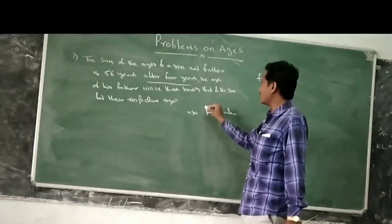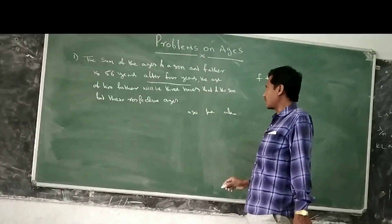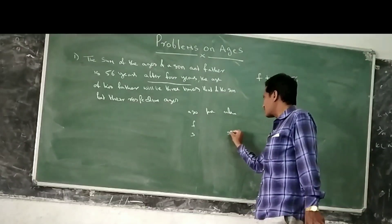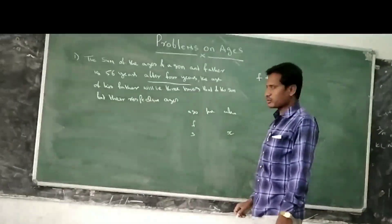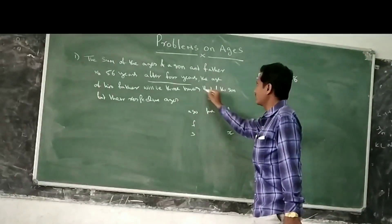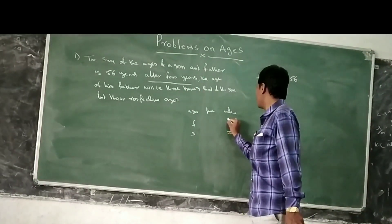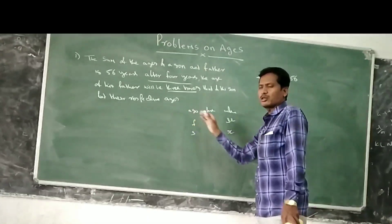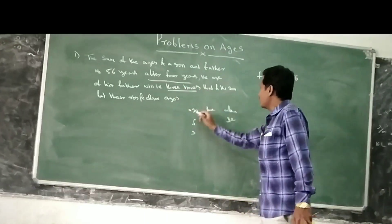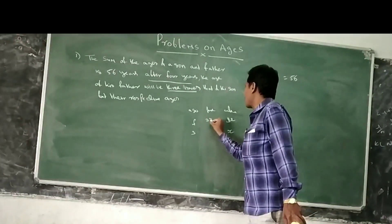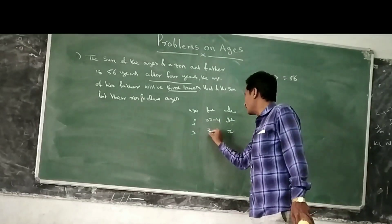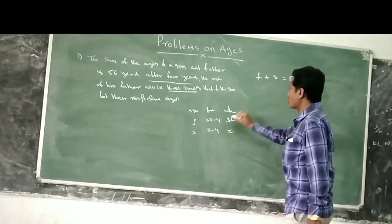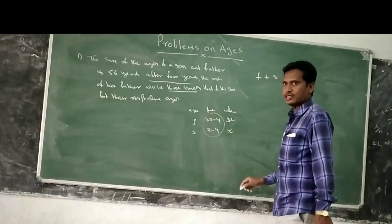After 4 years, the age of his father will be 3 times that of the son. That is father, son. 3 times means son x, father will be 3x. Present age: after 4 years is a subtraction state. 3x minus 4 and x minus 4. Father plus son equals 56 years. Let us add.